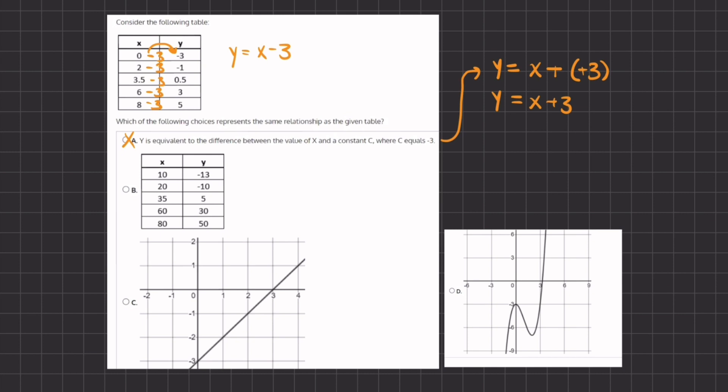We have another table given with the values of x and y, and so let's see if our pattern continues here. If it does, then this will be the correct answer. If we do x, the value of x, which is 10, minus 3, we should get a 7. But here we are getting a negative 13. And as you can tell, this pattern does not continue, and therefore b is also eliminated.